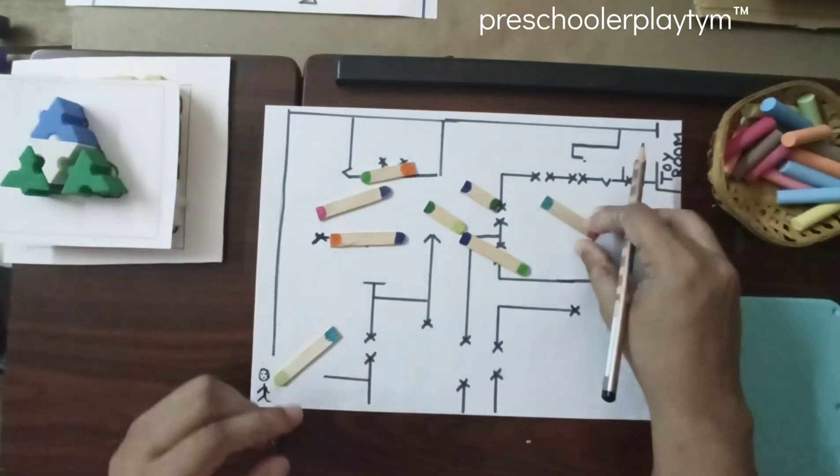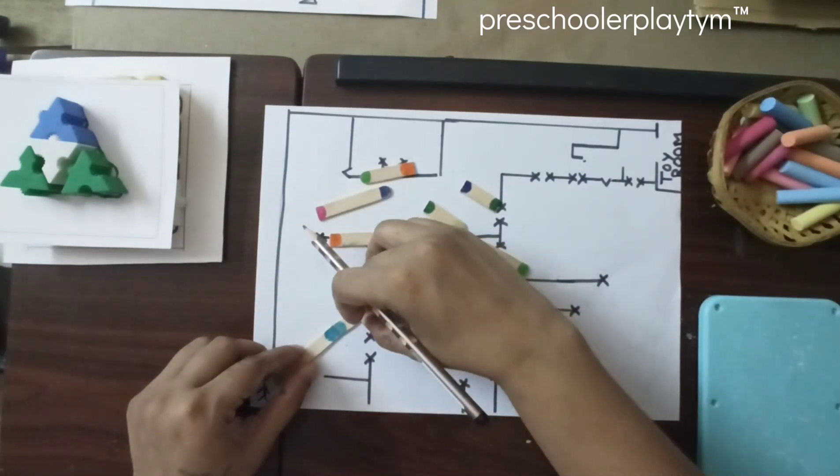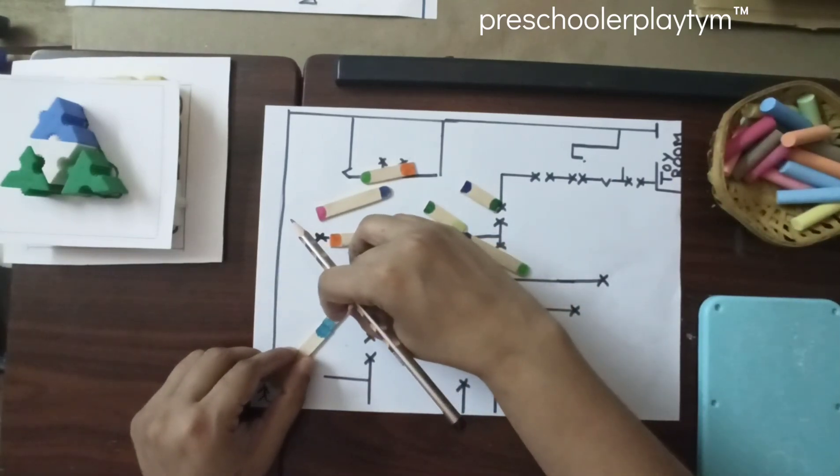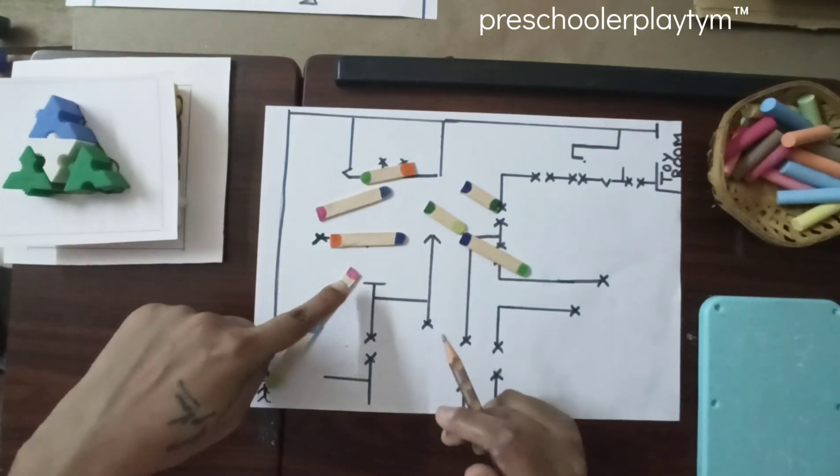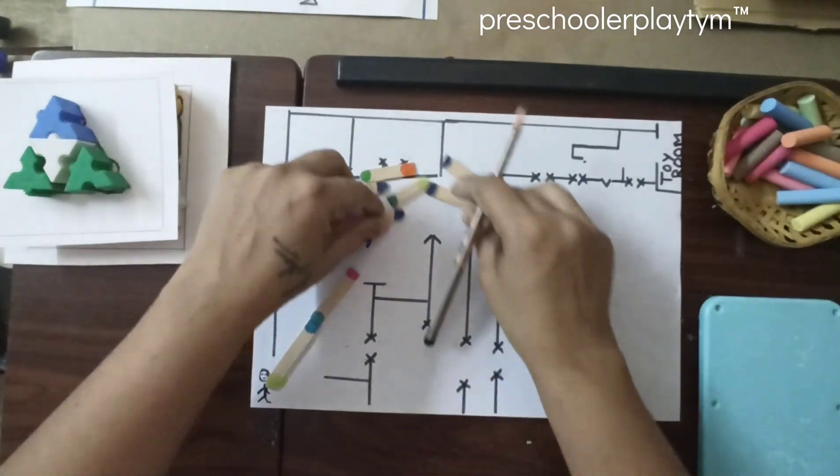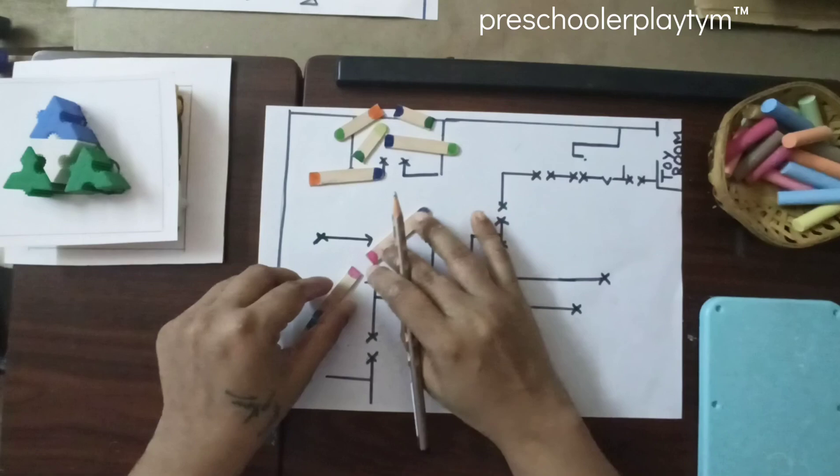This looks like a blue. So, they have to join it here. Do you see that? This is the way. Then, you see a pink color here. So, the kid has to look for a pink.